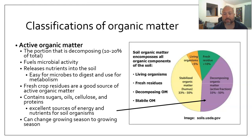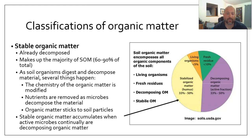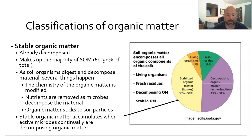Active organic matter can change growing season to growing season. Stable organic matter is already decomposed — humus makes up your stable organic matter, and it makes up 60 to 90% of soil organic matter. As soil organisms digest and decompose the material, several things happen: the chemistry of the organic matter gets modified, nutrients are removed as the microbes decompose the material, and the organic matter sticks to soil particles. The stable organic matter accumulates when active microbes continually decompose organic matter.